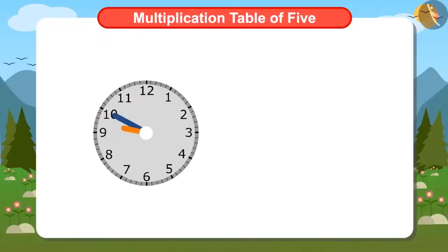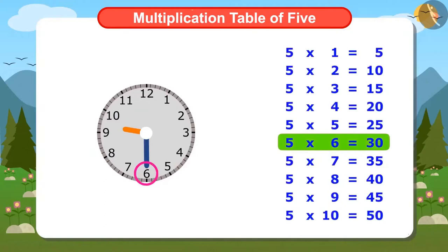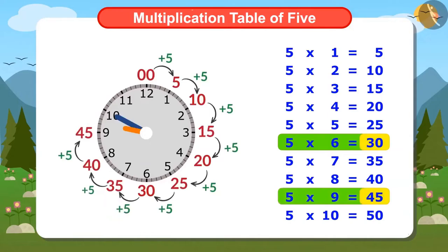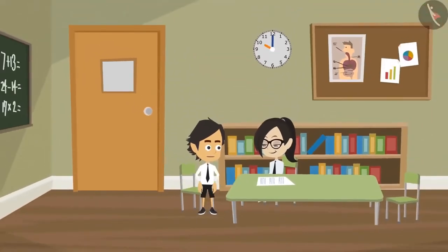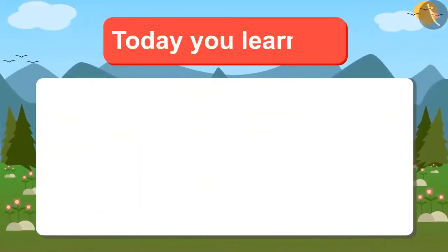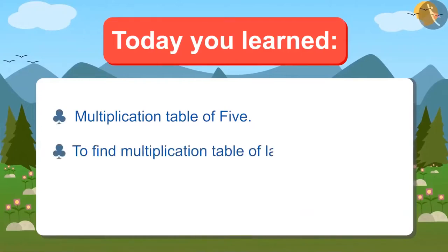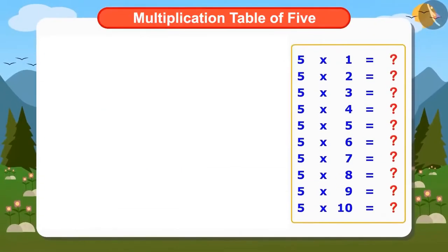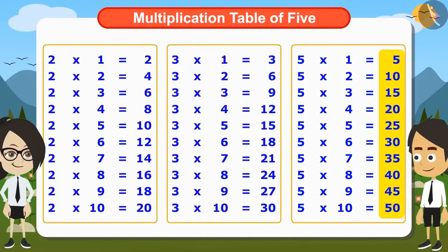Now look at the clock. When the minute hand is at 6, reading the multiplication table of 5 till 6 will tell that it is 30 minutes. And when it's on 9, it will be 45 minutes. Yes, this is the right way to read time. Today we have learned the multiplication table of 5 and also got to know that to find the multiplication table of large numbers, you can use the multiplication table of small numbers, like Vandana used the multiplication tables of 3 and 2 to find out the multiplication table of 5.